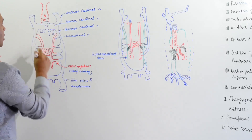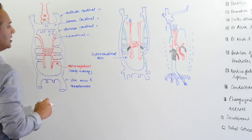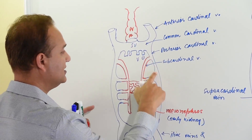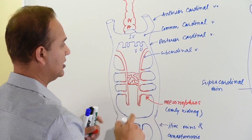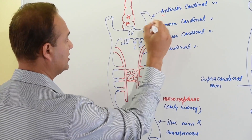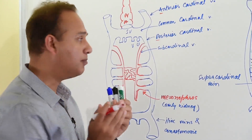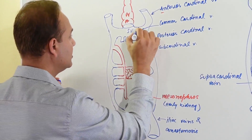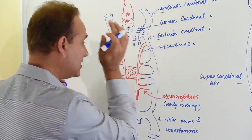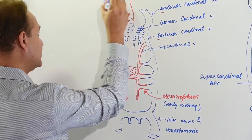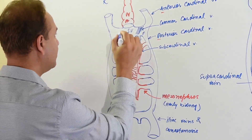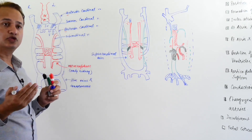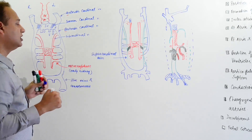On each side of the heart tube there are cardinal veins. These are the anterior cardinal veins, and the blue ones are the posterior cardinal veins. Where both cardinals combine, that becomes the common cardinal. On the right side, the common cardinal becomes the superior vena cava, or becomes part of the superior vena cava.